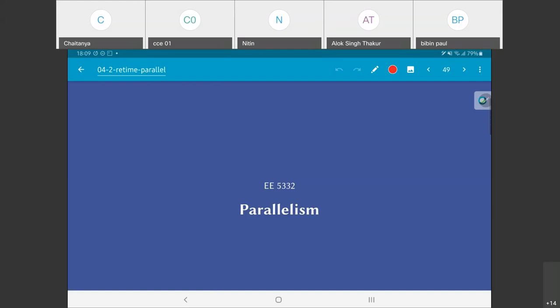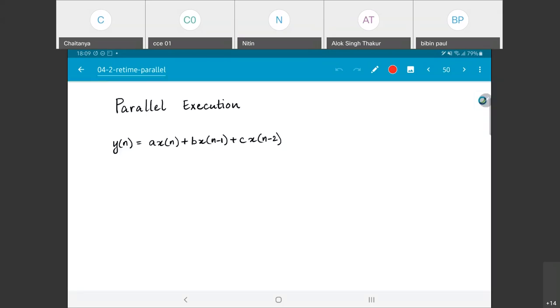The next transformation we would call parallelism. I am going to look into this by taking a specific example. The example I am going to take is a simple 3-tap FIR filter: y of n is equal to a x of n plus b x of n minus 1 plus c x of n minus 2.